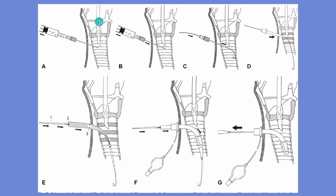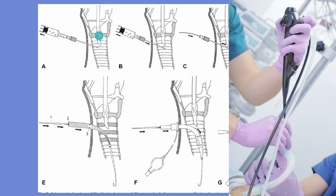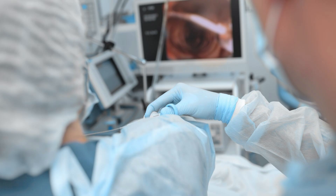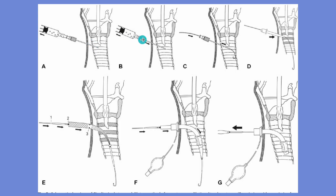For the percutaneous method, let's imagine this is the trachea. The patient is intubated, so there is an endotracheal tube here. They will push the endotracheal tube up a little bit so they can insert the needle first. A bronchoscopy tube is inserted here so they can observe the needle insertion.